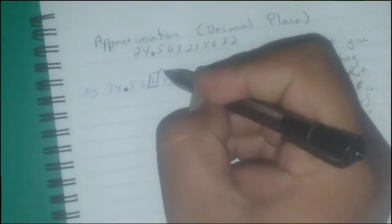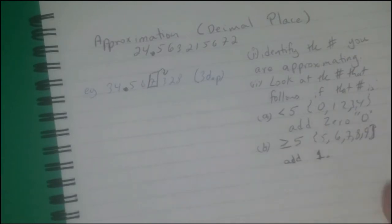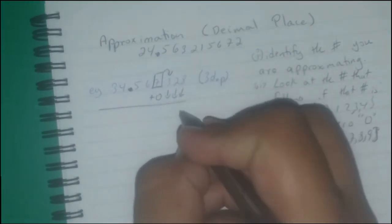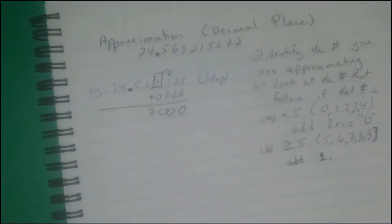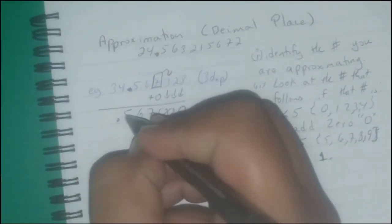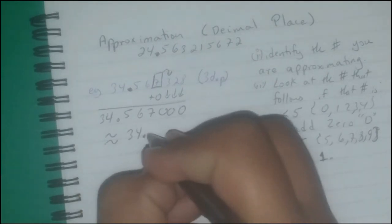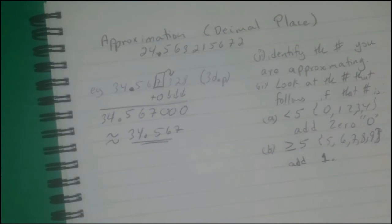In our example 34.567328, the number that follows the third decimal place is 3, which is less than 5. So we add 0 to the 7. All other numbers that follow become 0. So 7 plus 0 is 7, giving us 34.567. That number has been approximated to the nearest third decimal place.